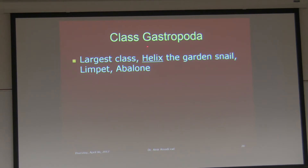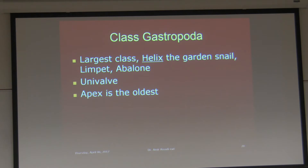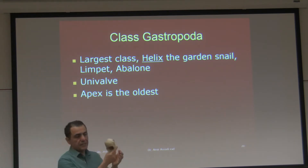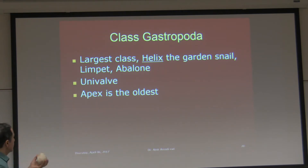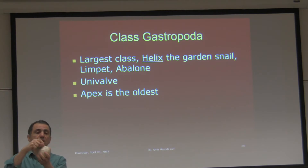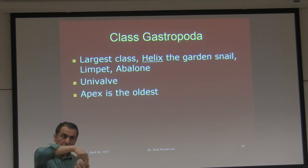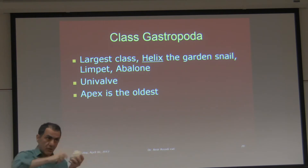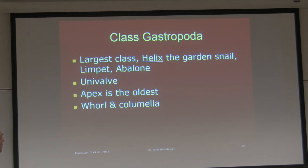Limpets are smaller. Gastropods are usually univalve — they have one shell. We do have them in the lab; we have limpet and abalone shells. The apex is the oldest portion of the shell. This is possibly the biggest shell we have in the lab. As the animal ages it grows larger and larger, and it depends on the whorl and the columella.